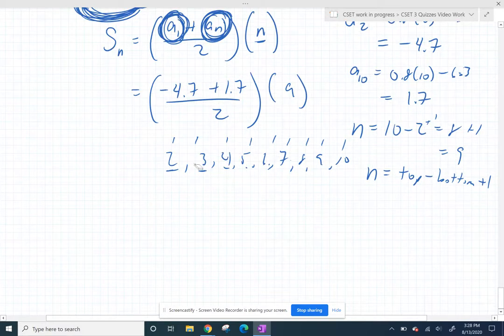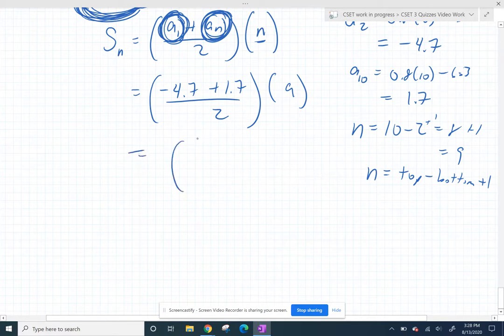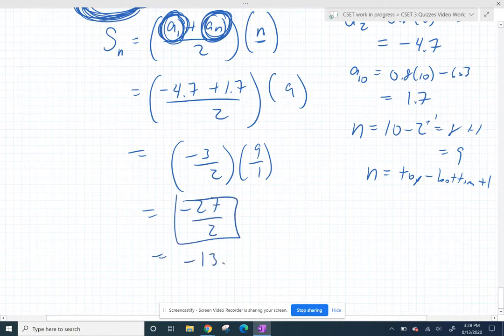And then we just punch that in so that we get, what is that? Negative 4.7 plus 1.7 is negative 3 times 9 over 1 is negative 27 over 2. And I like this, but the answer key makes it into decimal. Fine. Doesn't matter. I kind of like the fraction better. 27 halves.